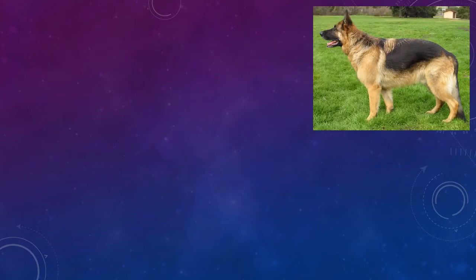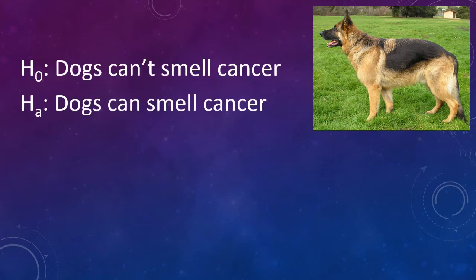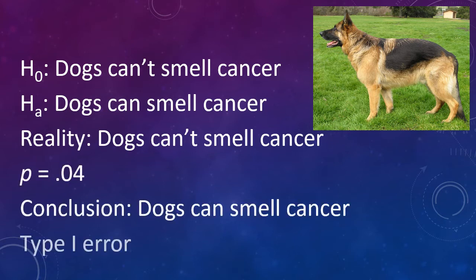For example, German shepherds have a very keen sense of smell, which is why they're often used to sniff out explosives in public places. A researcher wondered whether German shepherds could also be trained to detect cancer by sniffing human breath. The researcher trains a few dogs and asks you to run an experiment. Suppose that in reality, the dogs can't tell the difference between cancerous and non-cancerous breath. By chance, when you run your study, you get a p-value of 0.04. Even though they can't tell the difference, you'll get a p-value this small about 4% of the time. I guess you were just unlucky this time. Because the p-value is small, you decide that the dogs can tell the difference, but this really isn't true. You've made the wrong decision. You rejected the null hypothesis of no difference when it was actually true. This is a Type I error.